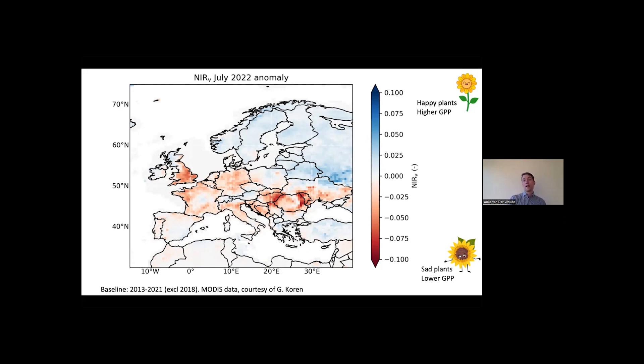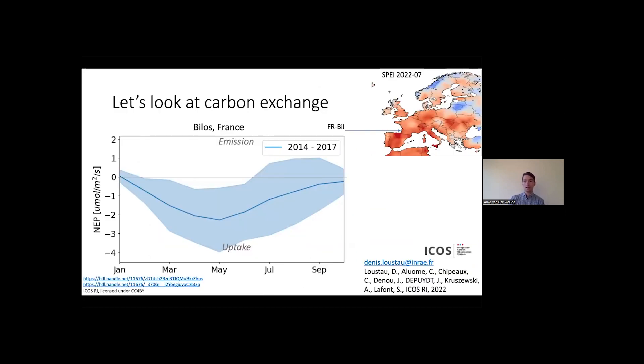This is, of course, only just a proxy. This is a spatially observed pattern. And although informative, it doesn't tell us anything about how much carbon was exchanged. And to show you that, I show you here a measurement from a site in the south of France. This is the Bilos site. And this is the NEP, the Net Ecosystem Productivity, with emissions if it's above zero, so that means fluxes from the ground into the atmosphere. And if it's below zero, there's uptake, which means carbon uptake from the atmosphere into the ecosystem. And I show you here in blue the climatology, which is 2014 to 2017, so that's four years of data. And in the blue shading, there's the standard deviation.